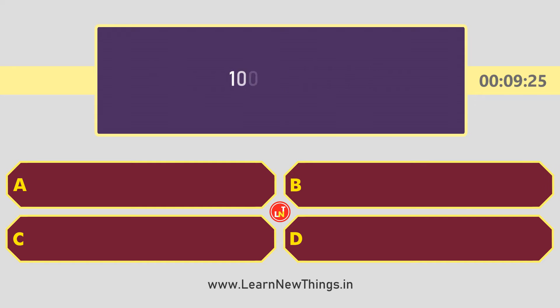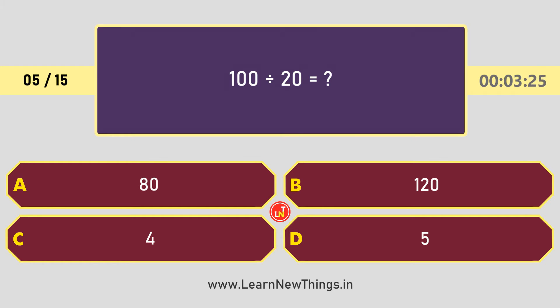100 divided by 20 is equal to? The answer is 5.